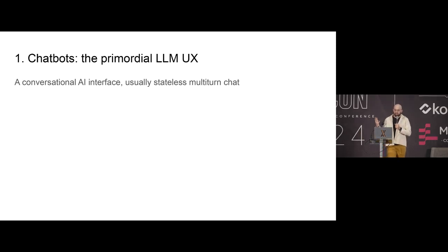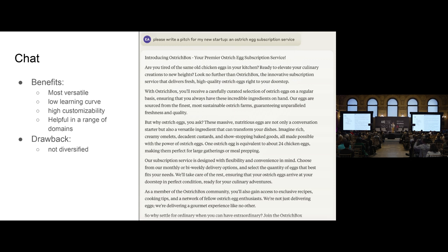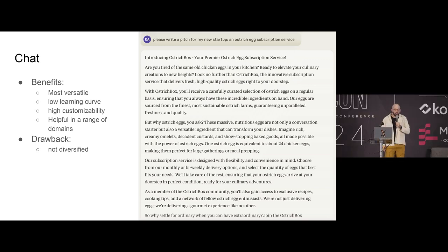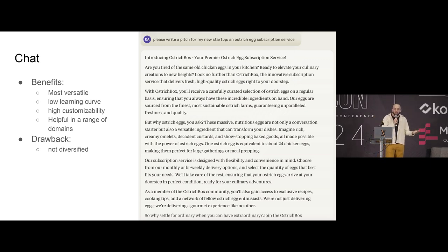Chatbots are conversational AI interfaces, usually stateless — meaning states between chats don't persist — usually multi-turn. ChatGPT.com, Claude.ai. They're really nice. Here is an example of me asking Claude to write a pitch for my new startup, an ostrich egg subscription service. It writes something completely reasonable, certainly better than what I would write. The way I would describe these chat UIs is that they're super versatile, super easy to use — it's literally the same interface you used to text your friends or email them. Super customizable. You can do whatever you want: math questions, therapy, who's going to win the next NBA championship. The drawback, though, is as a product it's not very differentiated — you already have online websites where you can do this. Building a new one is not really a clear way to win users. Why would they go to yours instead of the existing ones?